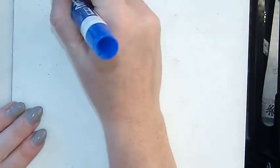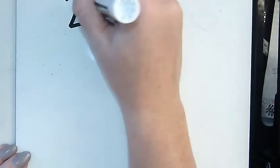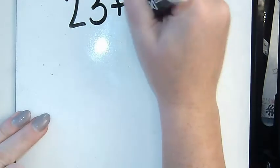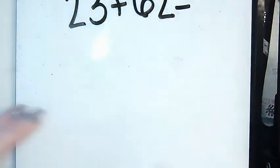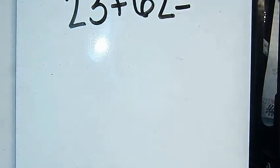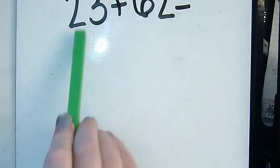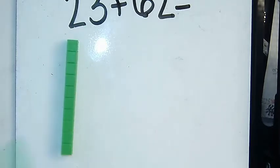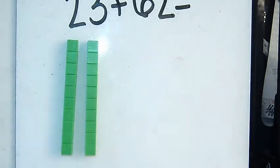So if I had a problem that was 23 plus 62, the way that I would do this in base 10 is I would look at the number 23 and there are two 10s. So I'm going to lay two 10s here and then I have three 1s.